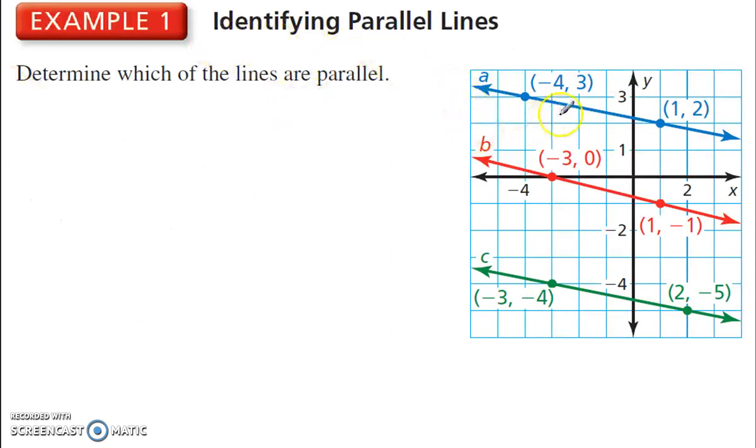Identifying parallel lines, so here we have three lines. They kind of look like they might be parallel. So let's check to see. We can either find the slopes from the points, or since they're on such a nice graph, we can just count it. This goes down 1, so minus 1, and then over 1, 2, 3, 4, 5. So over 5. That's the slope of line A.